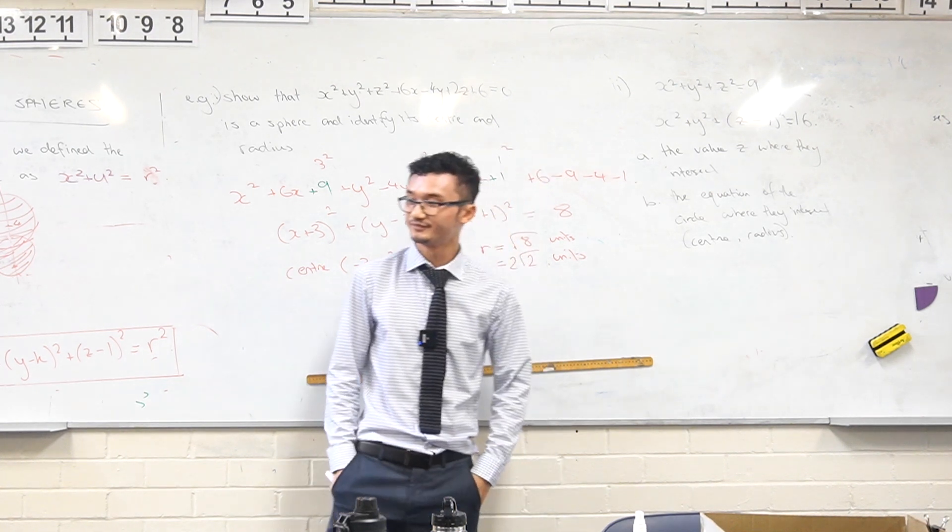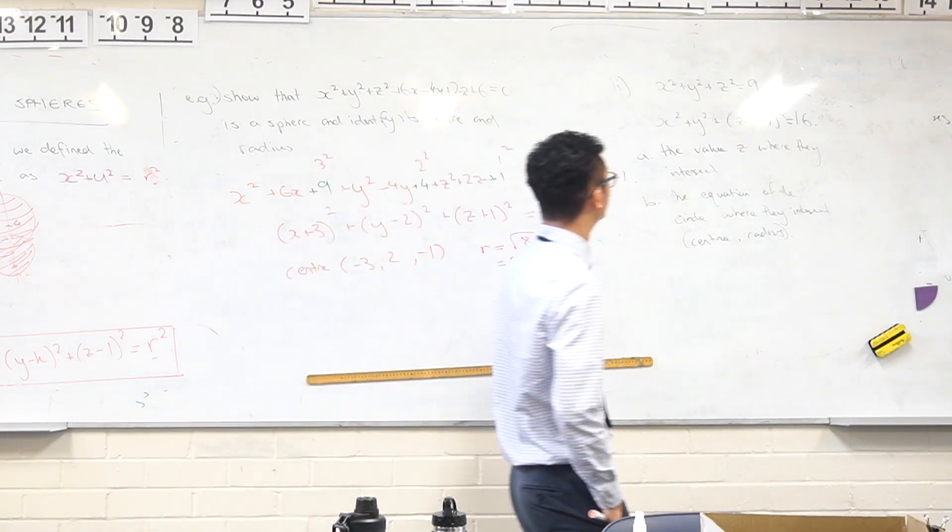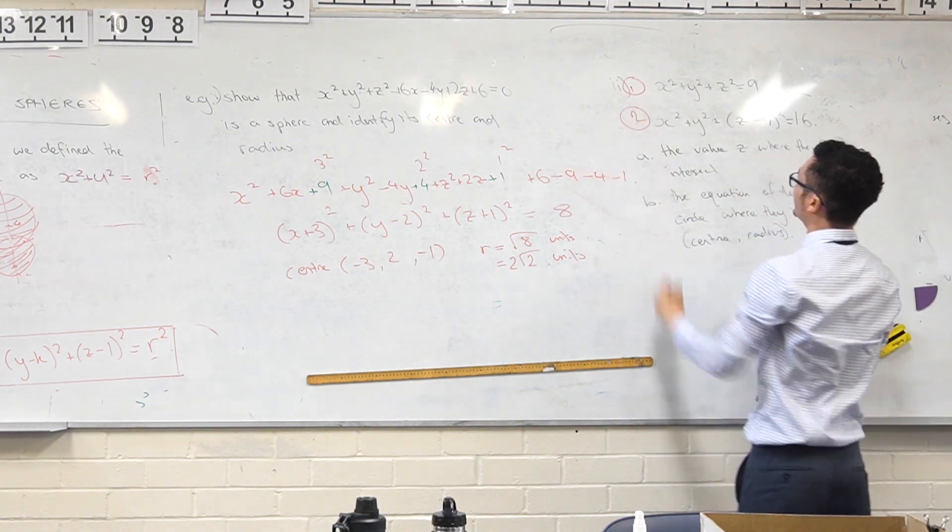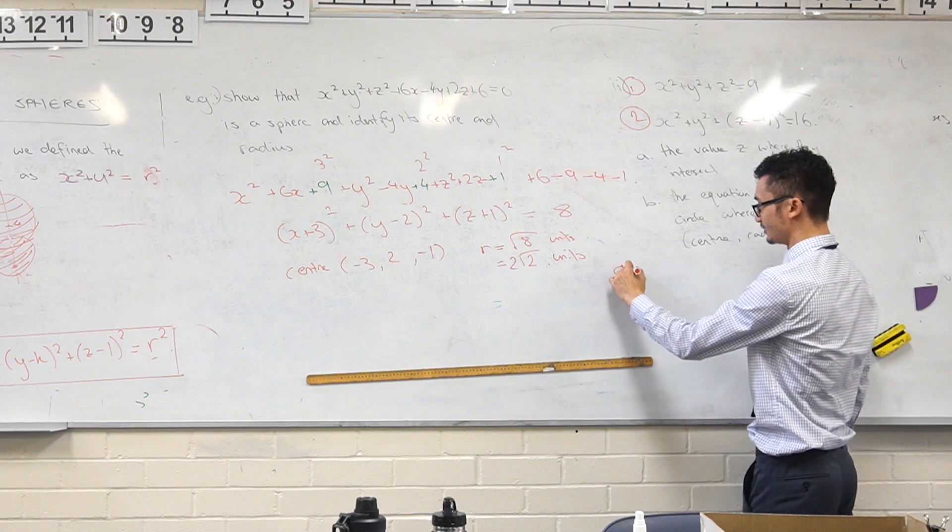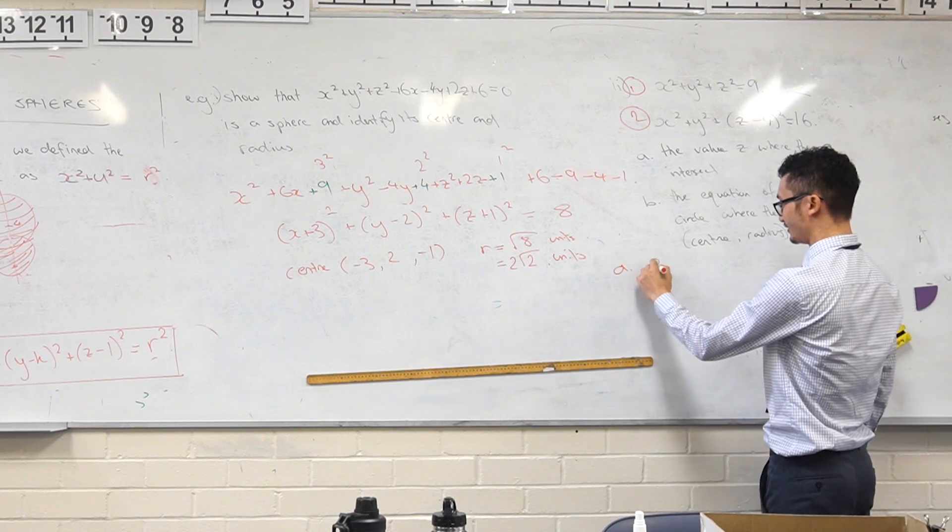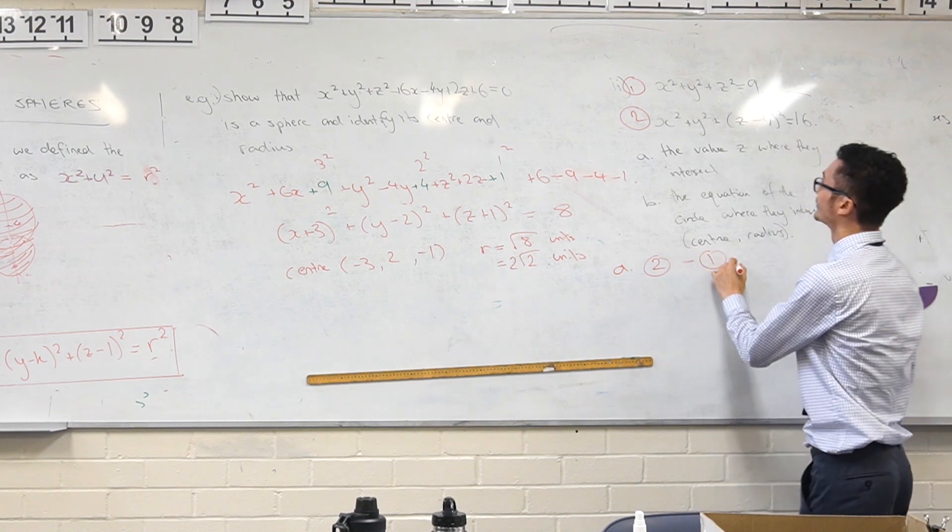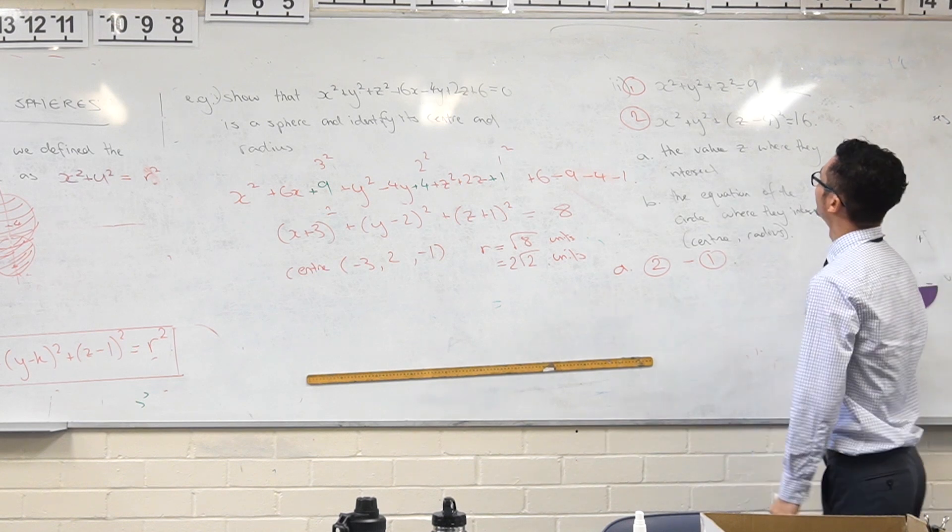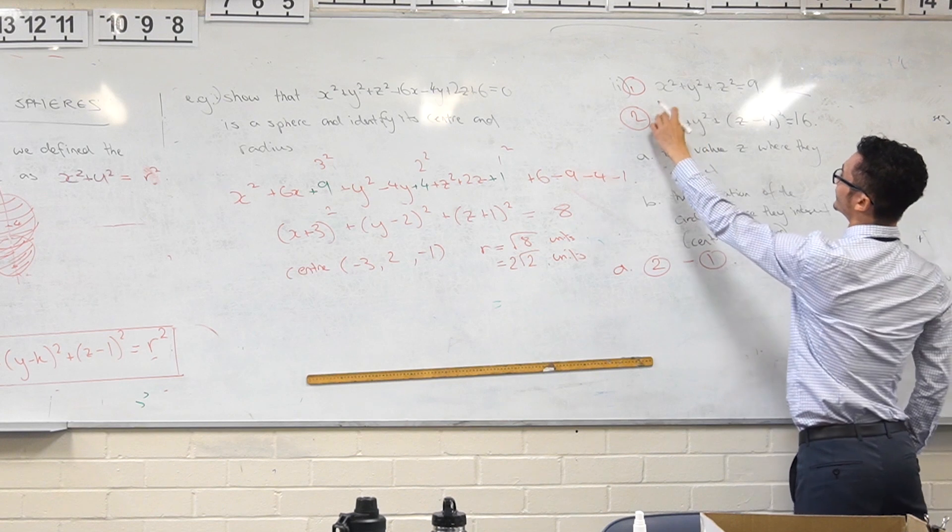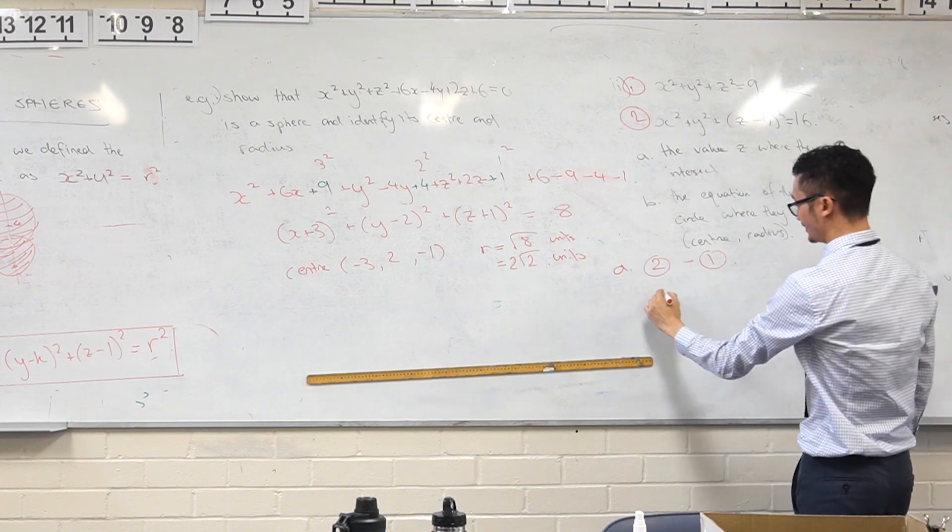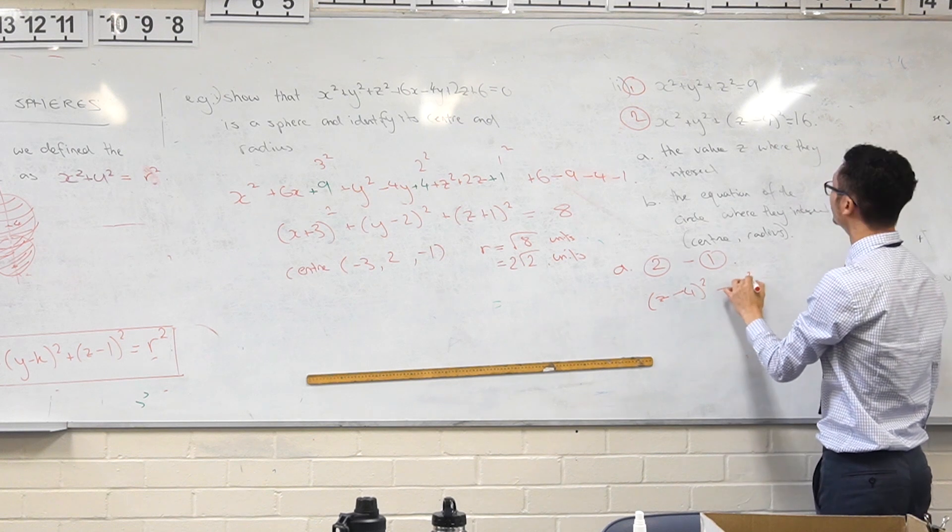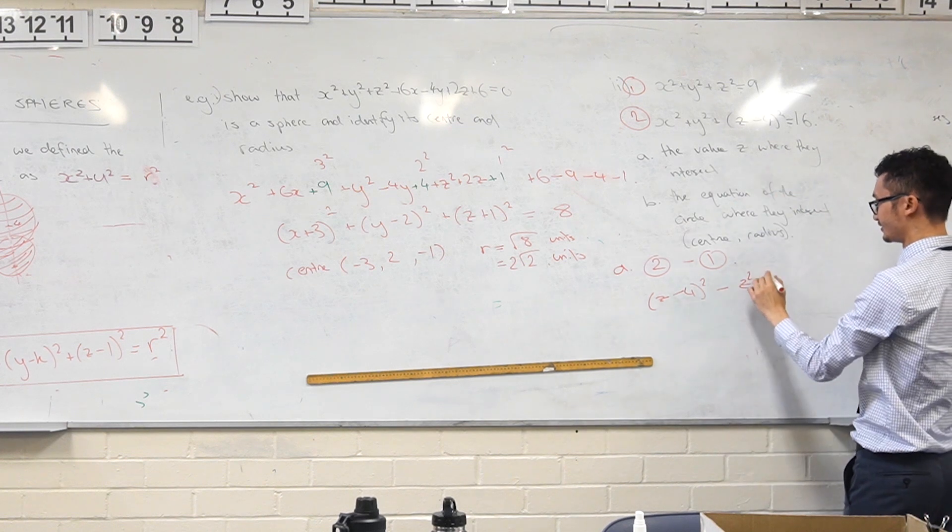We can see a quick way to solve this simultaneously. You subtract them? Yeah, for part A let's do this: we're going to do equation 2 minus 1, and that's going to leave me with these two canceling out. I'm going to get (z - 4)² - z² = 16 - 9.